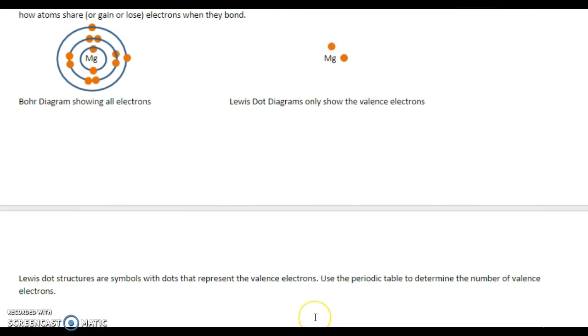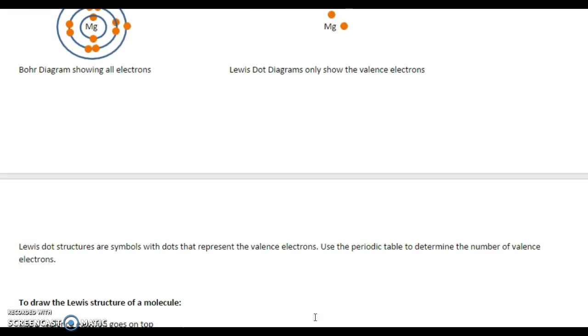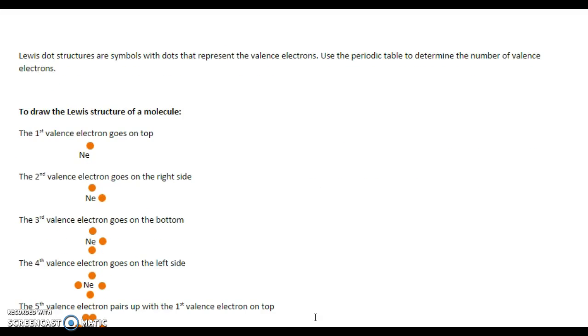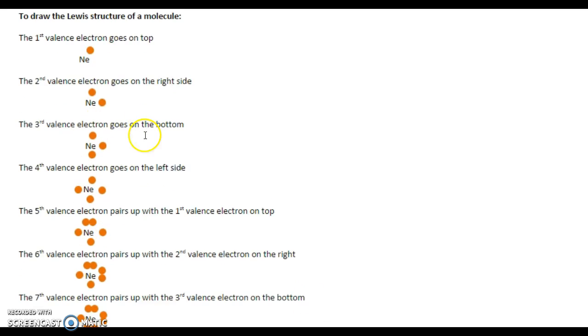Lewis dot structures or Lewis dot diagrams are symbols with dots that represent the valence electrons. Use the periodic table to determine the number of valence electrons. For example, to draw the Lewis structure of a molecule, you want to go around the clock the same way that we did with the Bohr diagrams.